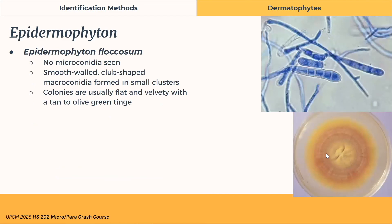The last is Epidermophyton floccosum. As mentioned, it has no microconidia. It has smooth, club-shaped macroconidia arranged in clusters. On agar, colonies are usually flat and velvety with a tan to olive-green pigmentation.